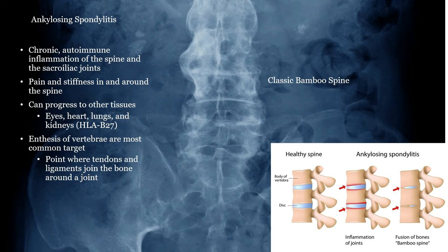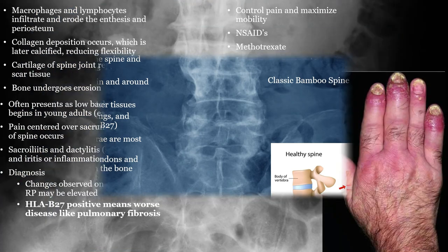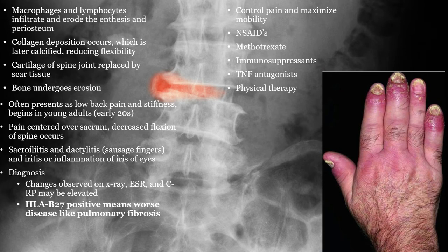Ankylosing spondylitis is an autoimmune disease that begins in patients in their 20s or 30s and usually affects the lower back. It can cause sacroiliitis as well as bamboo spine. Those with HLA-B27 positive disease can have a systemic autoimmune attack of the lungs and other organs. The important aspects to remember are the presence of sacroiliitis and possible dactylitis — do not confuse it with psoriatic arthritis. Iritis and pulmonary fibrosis can also be seen in its most severe form, usually HLA-B27 positive. Patients are usually male and young. Treatment is with immune-modulating medications.